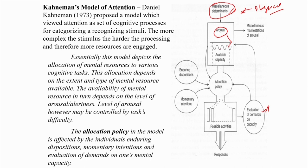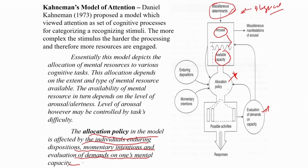In addition to arousal and available capacity, allocation policy is an important term in Kahneman's theory. Allocation policy is affected by individuals' enduring dispositions, momentary intentions, and evaluation of demands on mental capacity. Enduring disposition is like interest — if a person is interested in something, they put much more attention to it. If engaged in an interesting task, most attentional policy is allocated to that job and very little attention is left over.